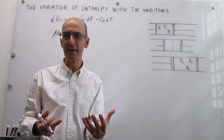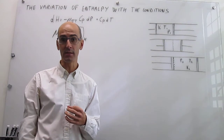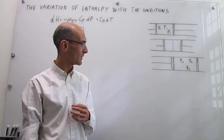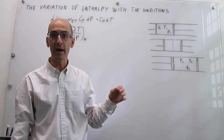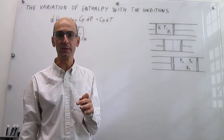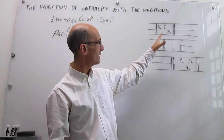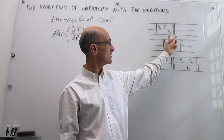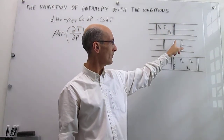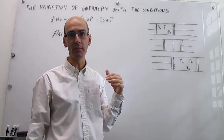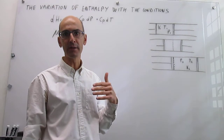How do you come up with an isenthalpic process — a process in which the enthalpy does not change? To illustrate that, we have here a diagram with an isenthalpic process. You have a container with two compartments, the left one and the right one, separated by a porous membrane that allows for the passage of gas but quite slowly.